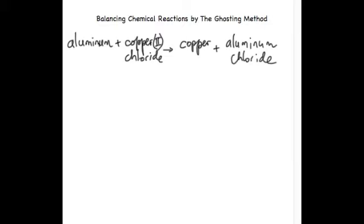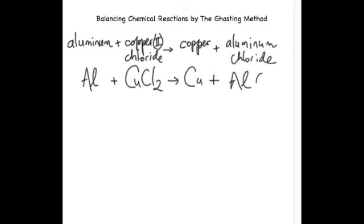And so, we can look at the chemical formulas, and I'm assuming you know how to do that. So, aluminum is Al, copper(II) chloride is CaCl2, copper is Cu, and aluminum chloride is AlCl3.